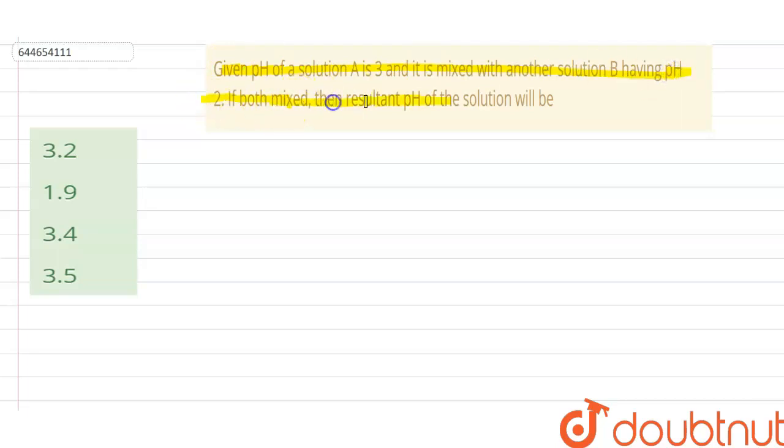We have to find the resultant pH of the solution when both are mixed. We know the formula of the pH, where pH is equal to minus log of H+ ion concentration, where concentration is in the form of molarity.